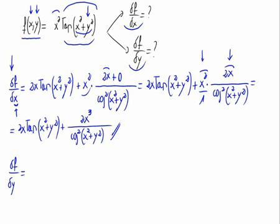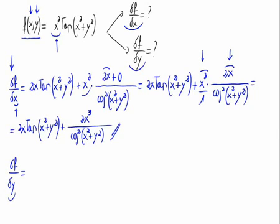Let's do the same but with respect to y. Now x would be a constant. That means we just have to differentiate the tangent of x squared plus y squared. Remember, x squared would stay the same, just like if it were a number.